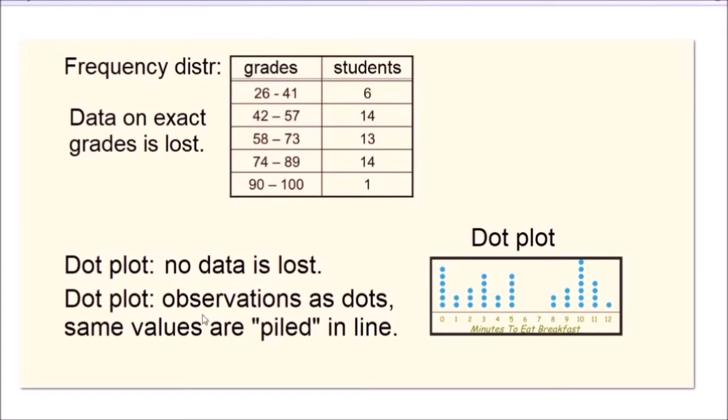Because dot plot shows each observation as a dot, and if observations have the same value, they are simply piled up on top of each other in a line, whether in a vertical line, as in this example, or in a horizontal line, which is often shown in relation to the Fed's interest rates.